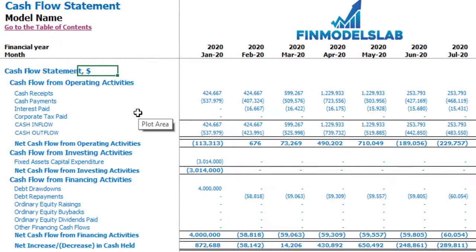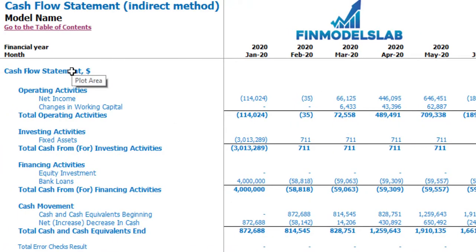On the cash flow statement you may see your cash flow broken down by cash flow from operating activities, cash flow from investing activities, and cash flow from financing activities. The same information you may see on the cash flow statement in a direct method — operating, investing and financing activities — but in a more collapsed form, just easier to review the information.